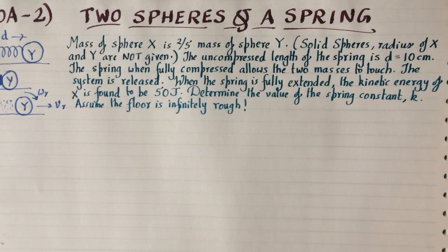We are given that the mass of sphere X is 2/5 the mass of sphere Y, and they're both solid spheres, but their radii are not given. The spring compression length is 10 centimeters, and the kinetic energy of sphere X is found to be 50 joules. We are asked to determine the value of the spring constant k.